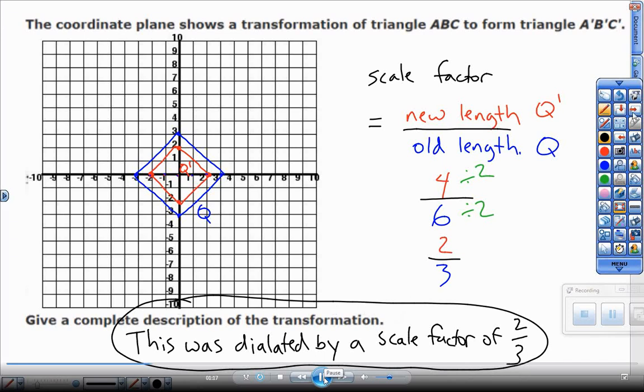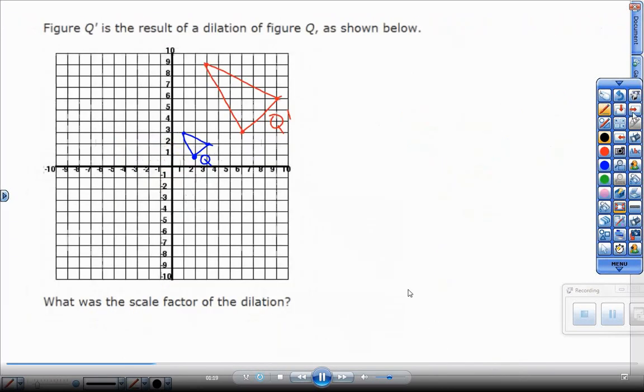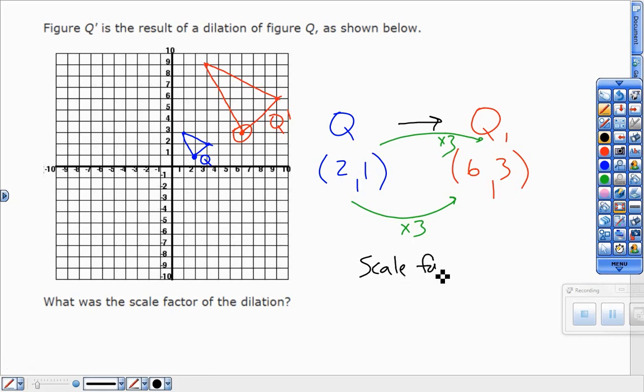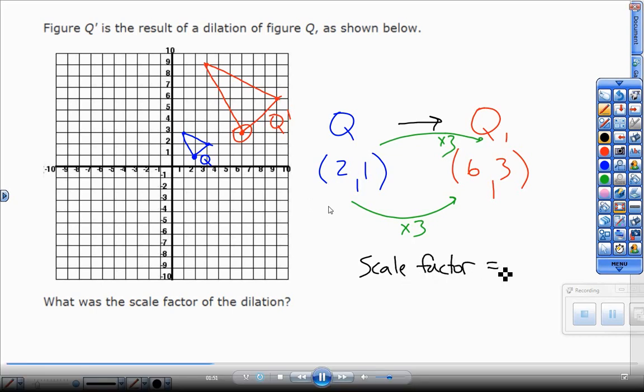Alright, the next problem has you find scale factor using just coordinates. So we're looking at Q the original, Q prime the new one. This is growing, going to have a scale factor bigger than one. So this point (2, 1) compared to the new bigger size (6, 3), I could see that I'm timesing every coordinate by three. That is my scale factor.